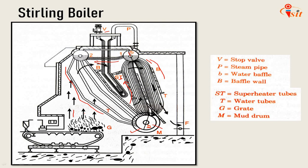Fire brick arch gets incandescent hot and helps in combustion and preventing the chilling of the furnace. The steam drums and mud drum are supported on steel beams independent of the brickwork. The Stirling boiler is lighter and more flexible than straight tube boilers, but it is comparatively more difficult to clean and inspect the bent tubes, which is a disadvantage of this boiler.